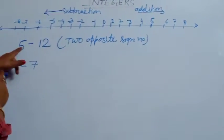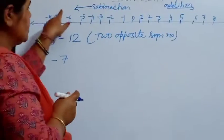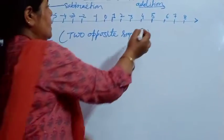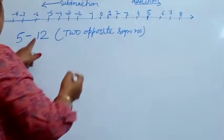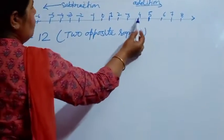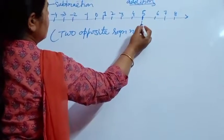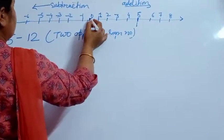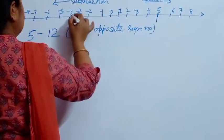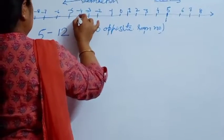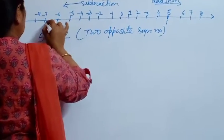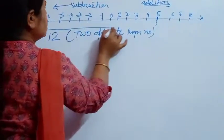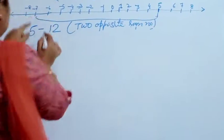This time we have to perform subtraction, so we will come in this left direction. Stand on 5 — here 5 is there. What you have to subtract? 12. Count: 1, 2, 3, 4, 5, 6, 7, 8, 9, 10, 11, 12. Where are you reaching? You reached minus 8. And this is our result.